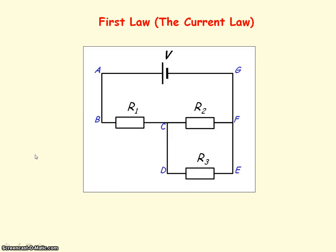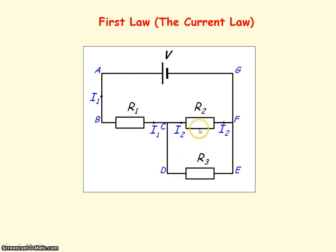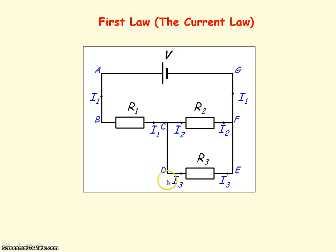If we apply Kirchhoff's first law to this circuit, where we have current I1 leaving the battery, that will pass through resistor R1. At junction C, the current has a choice to go through either R2 or R3. So we can have current I2 through resistor R2 and current I3 through resistor R3. At junction C, the current entering it is I1, and that will equal the current leaving C.